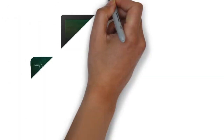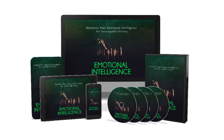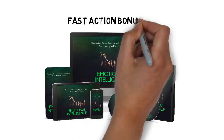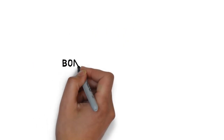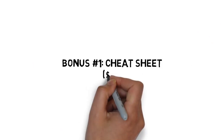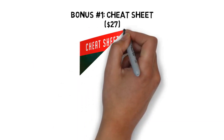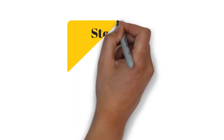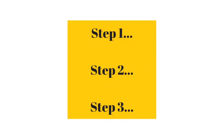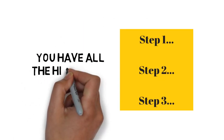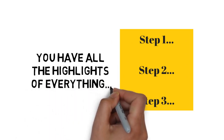And it just keeps getting better. When you make the wise decision to grab this today, you'll also get these fast action bonuses. Fast action bonus number one: emotional intelligence cheat sheet, valued at $27. This cheat sheet is a handy checklist that makes it easy to get started. It breaks up the entire guide into easy-to-follow steps so that you can make sure you have all the highlights of everything covered inside right at your fingertips.